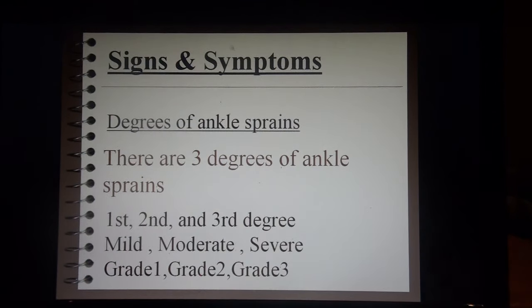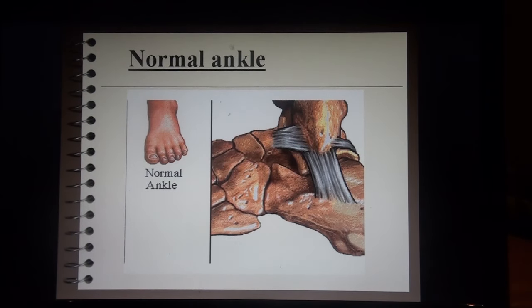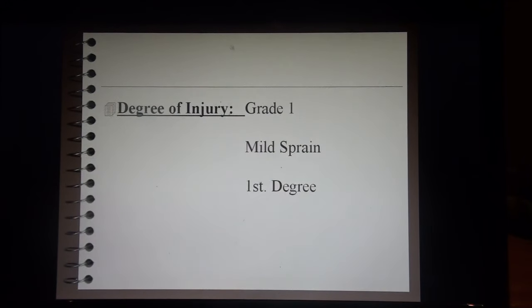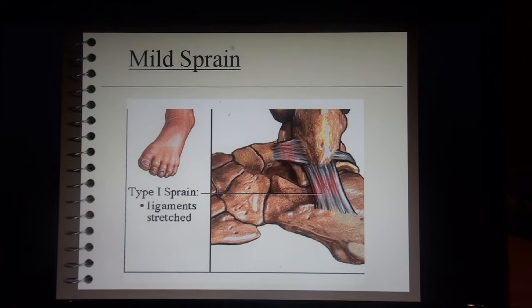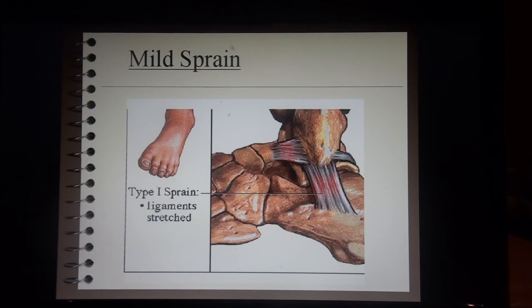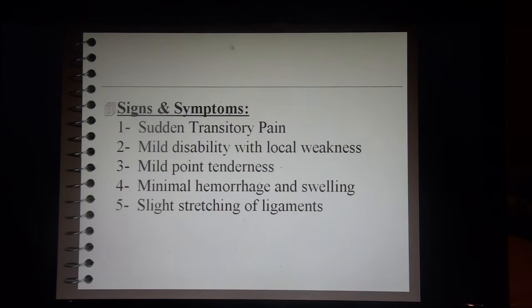There are three degrees of ankle sprains: first, second, and third degree — also called mild, moderate, or severe, or grade one, two, or three. In a grade one mild sprain, the ligaments are stretched slightly. You can see a little red discoloration. It's the kind of sprain you can sometimes walk off, lasting a couple of days. Signs and symptoms include sudden transitory pain, mild disability with local weakness, mild point tenderness, minimal hemorrhage and swelling, and just slight stretching of the ligaments.